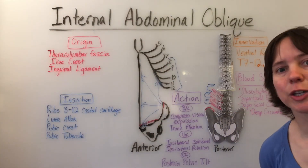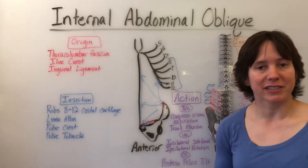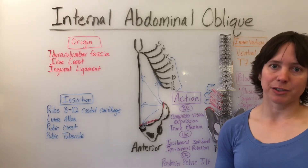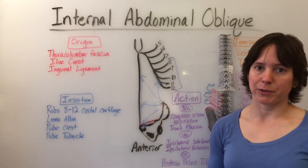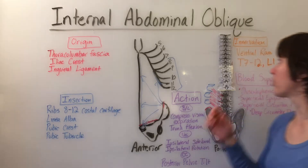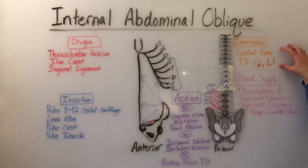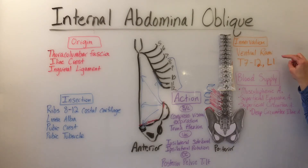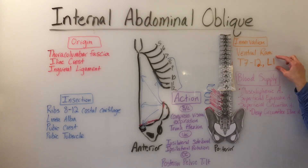The innervation is the same as the external abdominal oblique with ventral rami T7 through 12, and in addition, the internal abdominal oblique has the nerve root of L1.